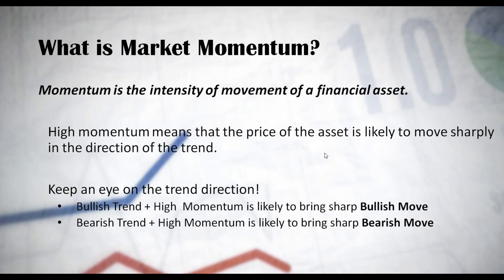In most cases, as you probably know, forex pairs are consolidating and not trending — around 70% of the time. In the other 30% of the time, forex pairs are trending. High momentum is also likely to appear when there is an absence of a trend, which makes it a bit harder to predict the direction of the sharp move we're expecting. In these cases, it might be better to use something else to help predict the direction of the asset.